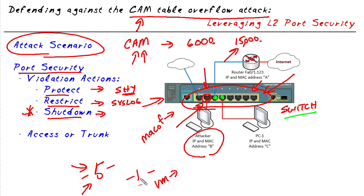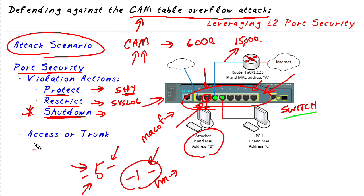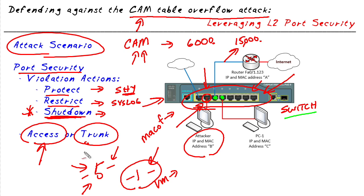The default parameters for port security are a maximum of one MAC address and a violation action of shutdown. Also important in a Cisco environment: the port must be configured as either an access port or a trunk port — it cannot be a dynamic port. Port security cannot be enabled on a dynamically negotiated port.